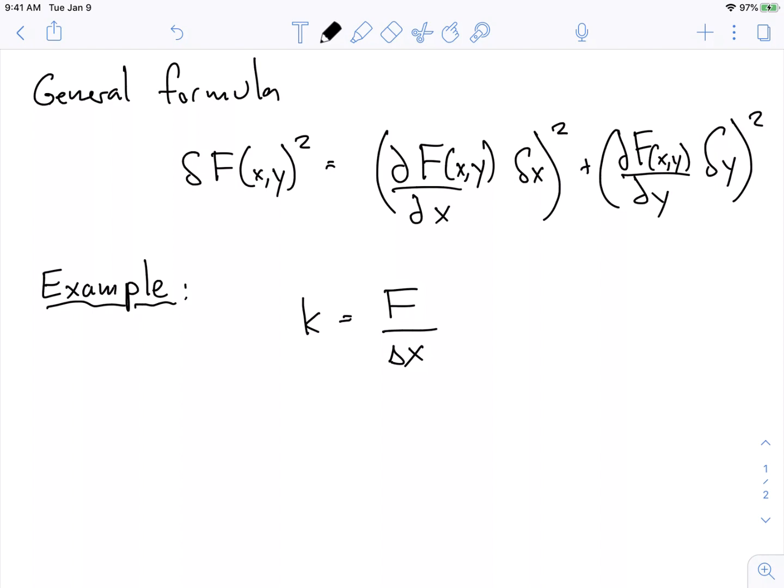And you might have error associated with or uncertainty associated with both of these things. So you might have a delta f for your force and an uncertainty in the change in position.